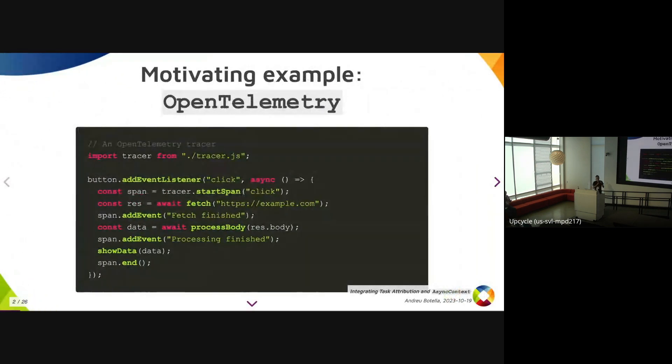So here's a motivating example. OpenTelemetry is an application monitoring tool for performance and soft, and here we have a tracer that we instantiated somehow, and here we have a click event where we start an OpenTelemetry span, which is a span of tasks that get tracked with performance and timing and stuff.